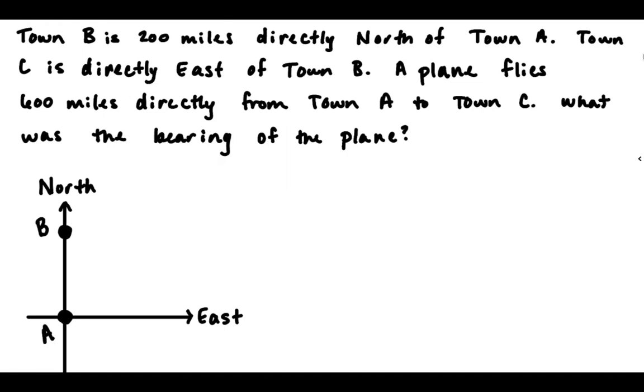And then we had town C is directly east of town B. So if I'm at town B, I want to go straight east, and somewhere out here, somewhere along this line, will be town C. So I'm just going to pick a place. So there's town C, and it's directly east of B.